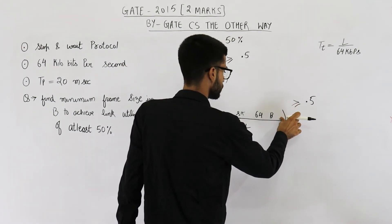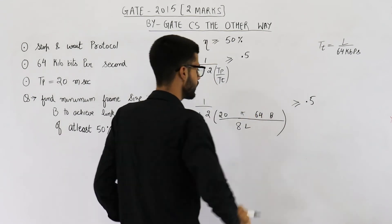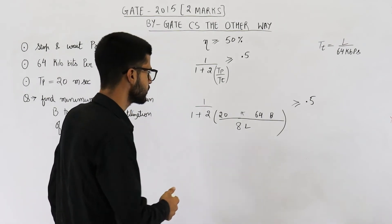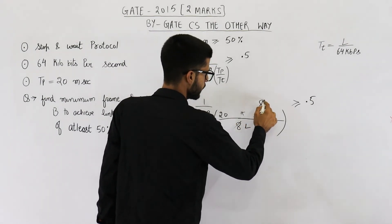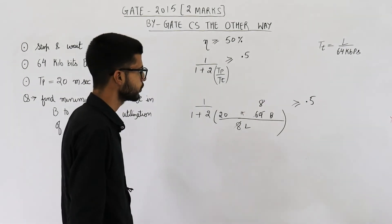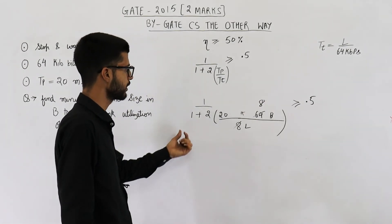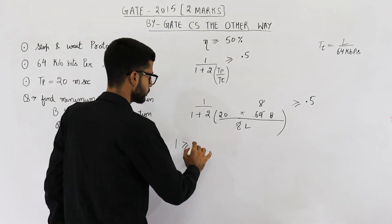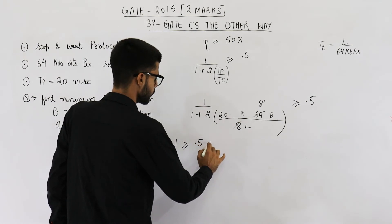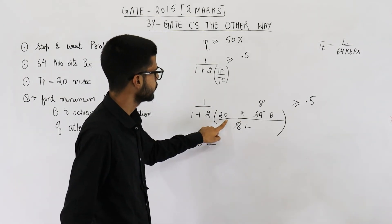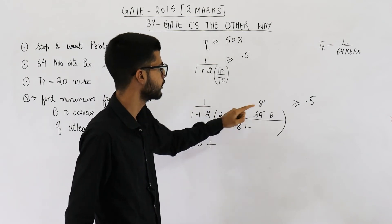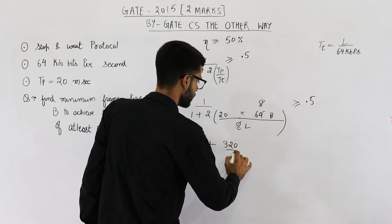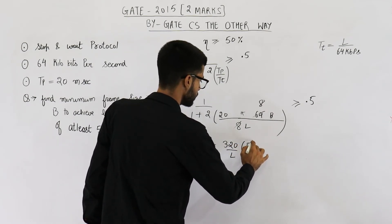So you are left with 20 multiplied by 64 bytes divided by 8 L. You can easily solve this. So 8 8's are 64. So next step will be let us multiply this denominator by 0.5. That means 1 is greater than or equal to 0.5 plus 20 into 2 is 40. 40 into 8 is 320. 320 divided by L into 0.5.